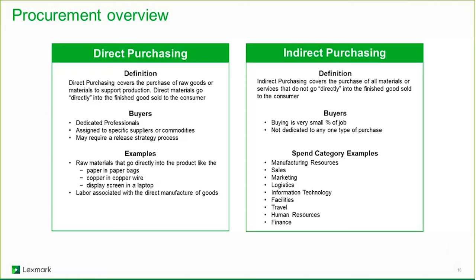Indirect spend covers the purchasing of all materials and services that don't go directly into finished goods. This is the area we focus on initially because it represents what we call maverick spend — the ability of someone to purchase ad hoc. This indirect purchasing happens throughout the entire company. The indirect procurement of services is a different universe compared to direct, with many nuances. The processes are typically not well defined because anyone has authority to initiate a transaction, so procurement executives need to establish strategies to reduce cost and improve the process.